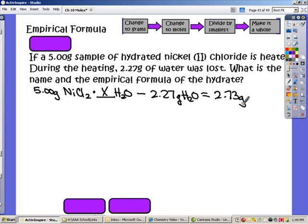Now I'm all set to follow this. Change it to grams. Well, we're already there. So I'm skipping to change it to moles. So I'm going to take each one of them here. I'm going to take the anhydrous nickel two chloride. That was my 2.73. And I'm going to take my water, which was the 2.27.